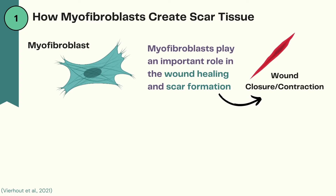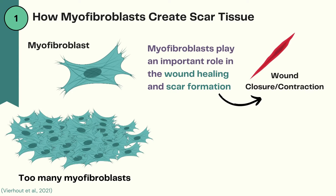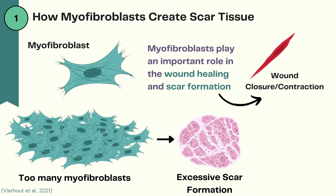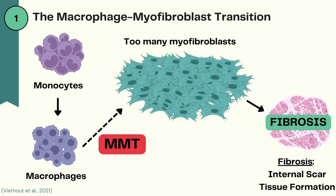Myofibroblasts play an important role in wound healing and scar formation. This typically happens after an injury occurs, and the creation of a scar is critical for the closure of a wound. However, there must be a fine balance of myofibroblasts kept, even when in the process of healing a wound, because too many myofibroblasts or their dysregulated behavior can result in excessive scar formation. In the case where there is too much scarring, an unwanted condition called fibrosis may occur. MMT is essentially describing the mechanism through which monocytes and macrophages transform into myofibroblasts and contribute to fibrosis.